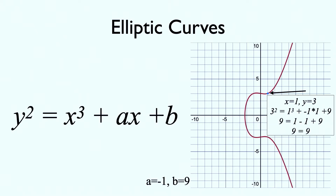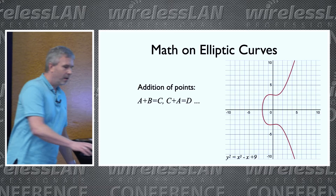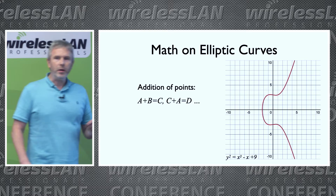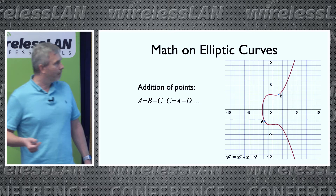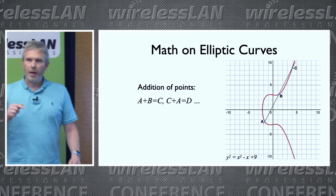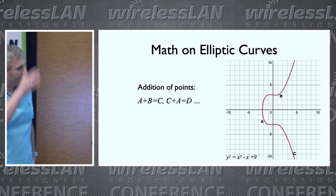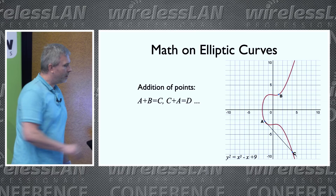We see that the curve has a symmetry. If we have a point at y equals three, there's also a point at y equals minus three. To qualify for a cryptographic system, there are some more characteristics that need to be fulfilled, but doing math on it is one of them. We can add points — we have an addition. If we have two points A and B, we can add them together by drawing a line through these two points, and it will cross the curve at a third point. This point gets reflected down, because of the symmetry, and that is point C.